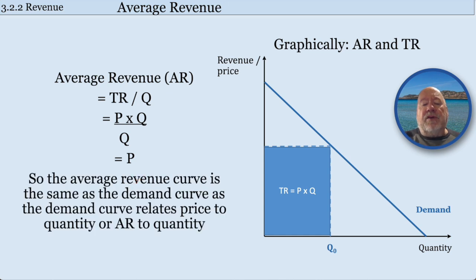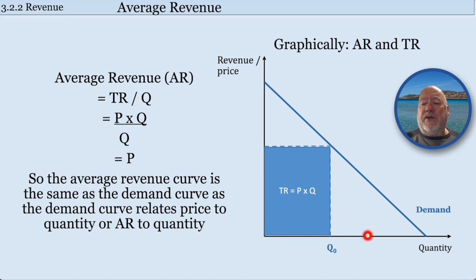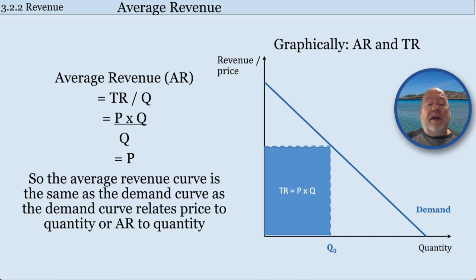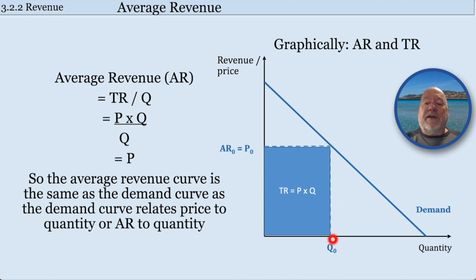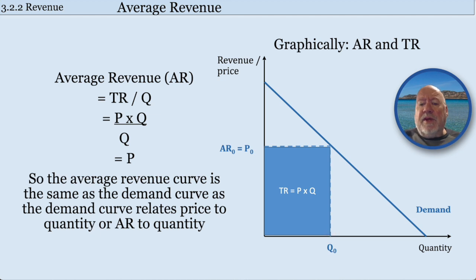The average revenue curve is this demand curve, because what the demand curve is showing you is how much is demanded at each and every price. So a certain quantity is demanded at a given price, and instead of saying price, you can say at that average revenue. So you can read the demand curve as the average revenue curve. On the axis you should now be putting average revenue, which equals price, and the quantity being demanded. The average revenue curve becomes the demand curve, and the area of that box is the total revenue.